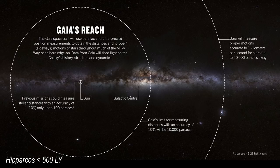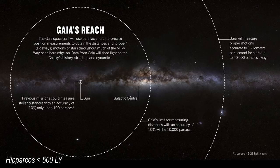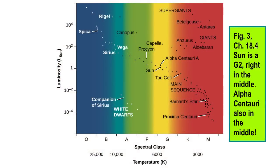Hipparcos got 118,000 stars approximately out to about 500 light years, but Gaia's distance is many times more than that — we're getting measurements from the other side of the galaxy. If a star isn't obscured by nebulas, Gaia will measure it. Gaia's going to be cooking up there for a long time; the more stars it gets, the better our HR diagram looks. This is figure three from 18.4. It marks the Sun in the G2 area, and you can see that Alpha Centauri A is right next to it. The European Space Agency's Gaia is a pretty nice spacecraft.